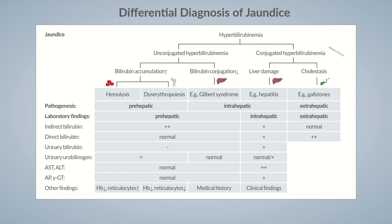Direct bilirubin is excreted into the urine and not the gallbladder, resulting in high levels of bilirubin in urine. The urine color is very dark. The stool is often pale and clay-colored, as direct bilirubin doesn't reach the colon and is not metabolized to stercobilin. There's also a decrease or absence of urobilinogen levels in urine as the enterohepatic circulation is impaired.